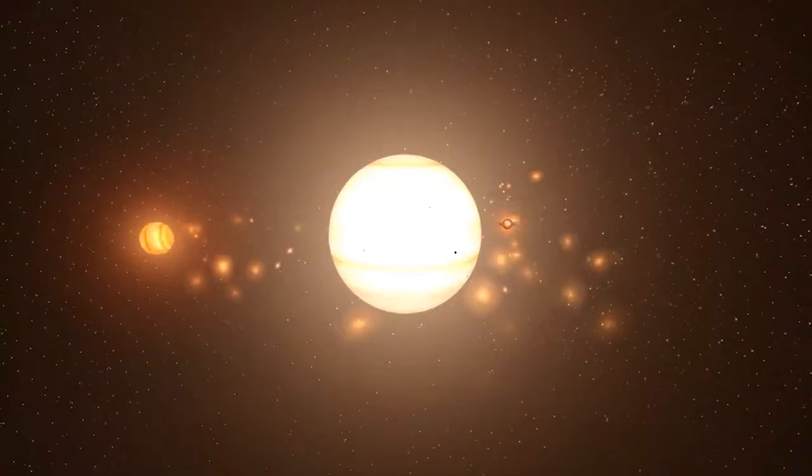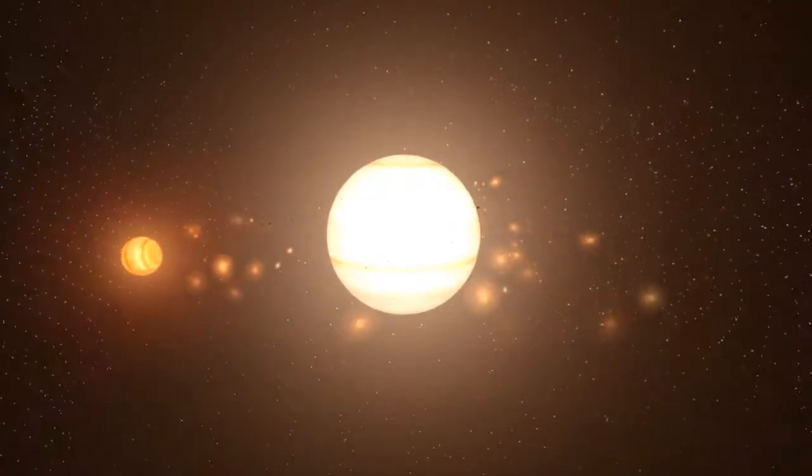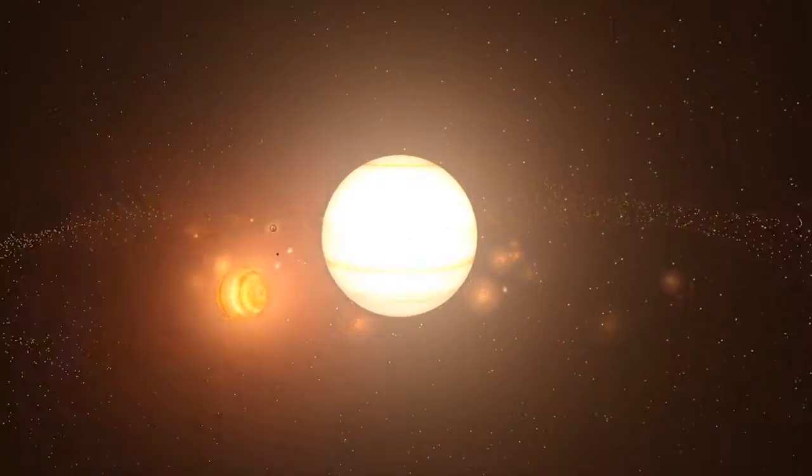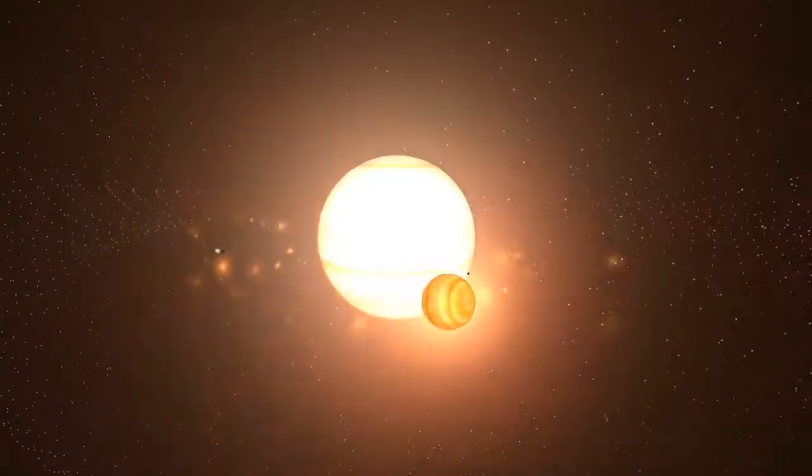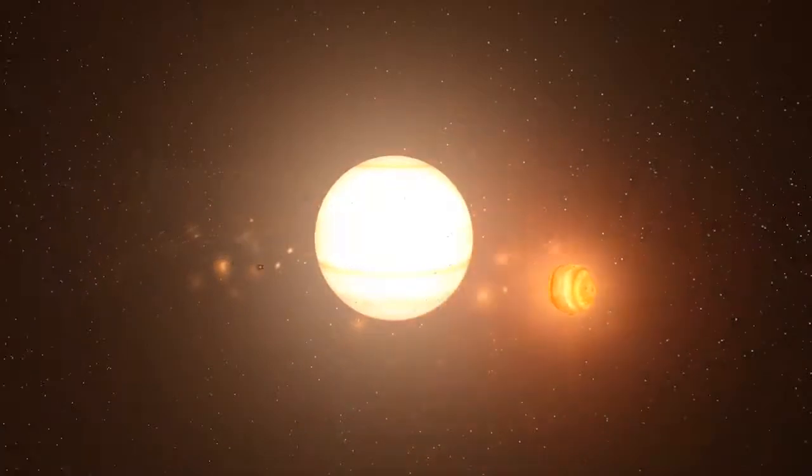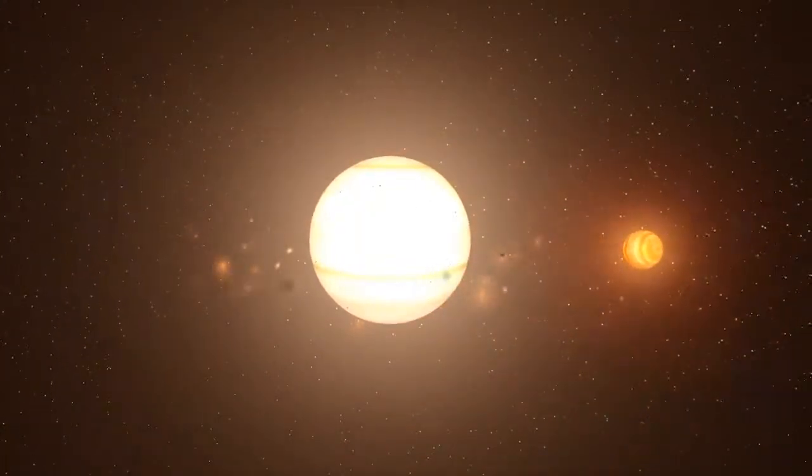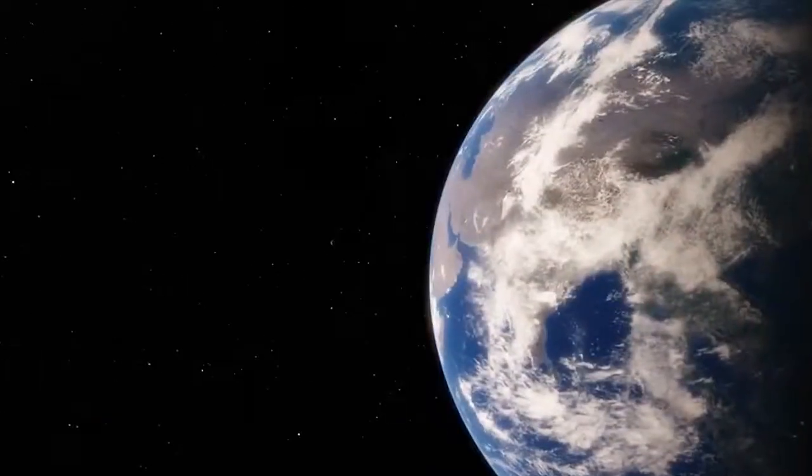After the protostar has finished collecting material, depending on how much mass it has acquired, it either becomes an average-sized main sequence star or a larger, more massive star. About 90% of stars in the universe are main sequence stars. Our sun in its current form is currently a main sequence star at the age of 4.6 billion years old, which is just a little older than the Earth.